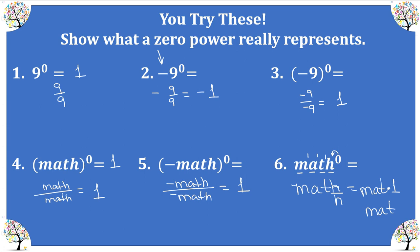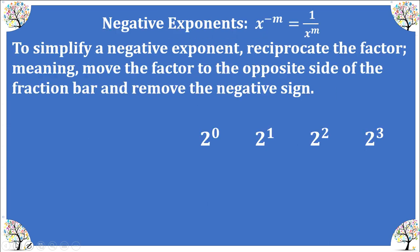In the previous example, parentheses indicated that all factors are included, so each one had an exponent of 0. Now let's take a look at when we have a negative exponent. I'm not talking about a negative base — I'm talking about when the exponent itself is negative.